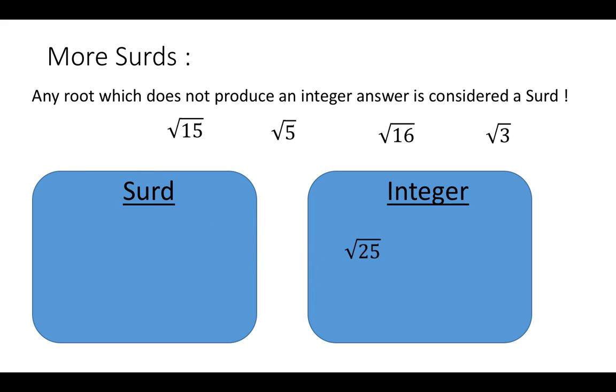You can see root 25, it's an integer. Because when you work out the square root of 25, the answer is exactly 5. It doesn't have a messy answer. Therefore, it can't be a surd.